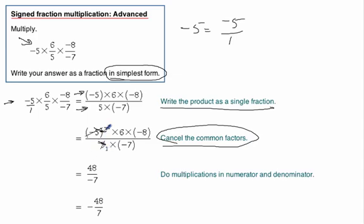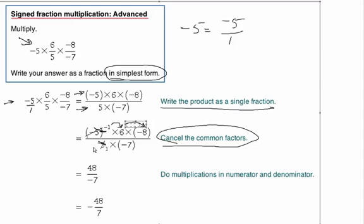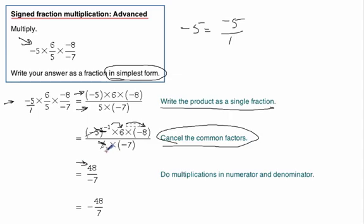Now we can just multiply through. Negative 1 times 6 is negative 6. Negative 6 times negative 8 makes 48. So that's how we get the numerator. And then on the bottom, 1 times negative 7 is negative 7. So there's our answer.